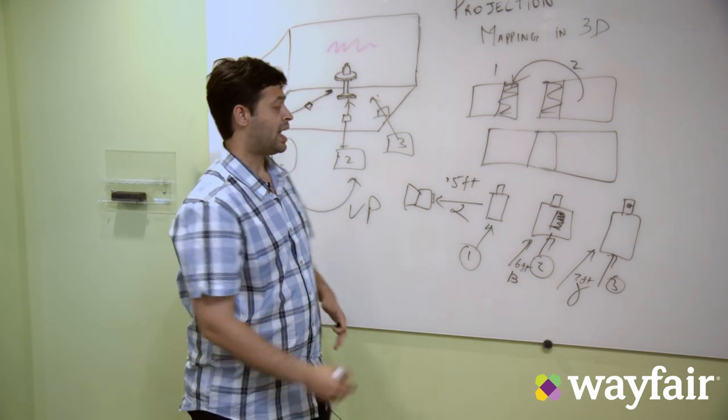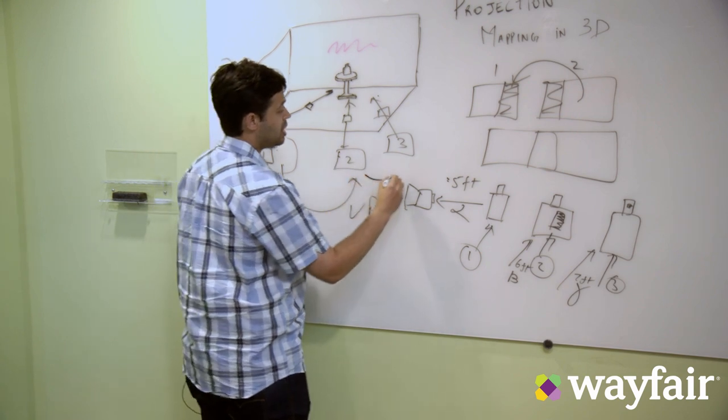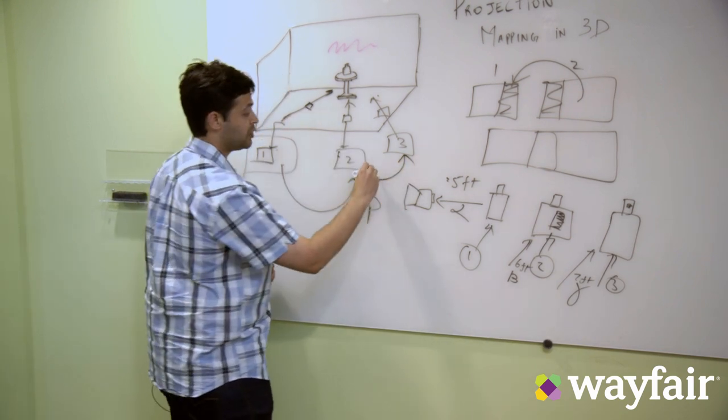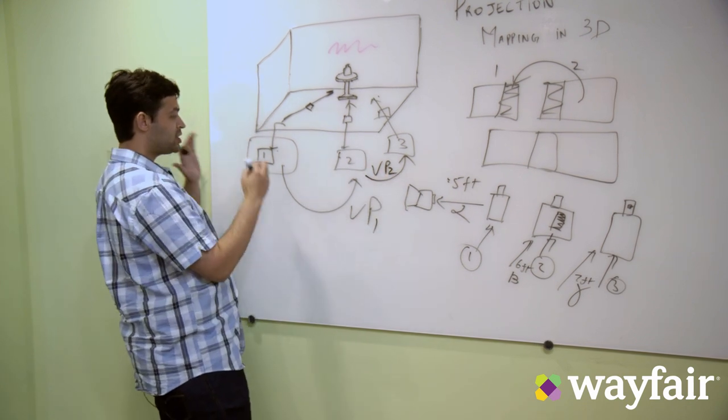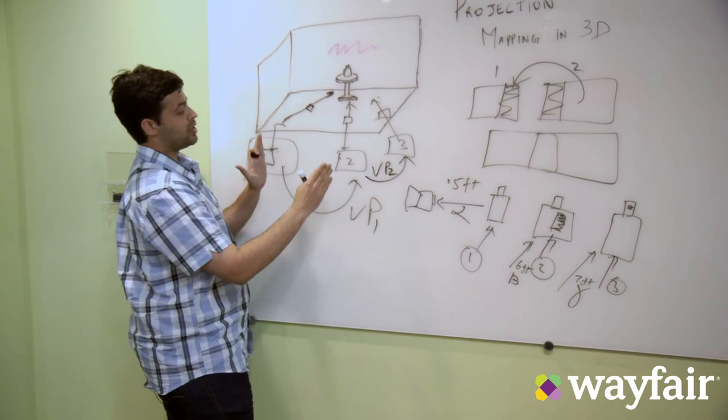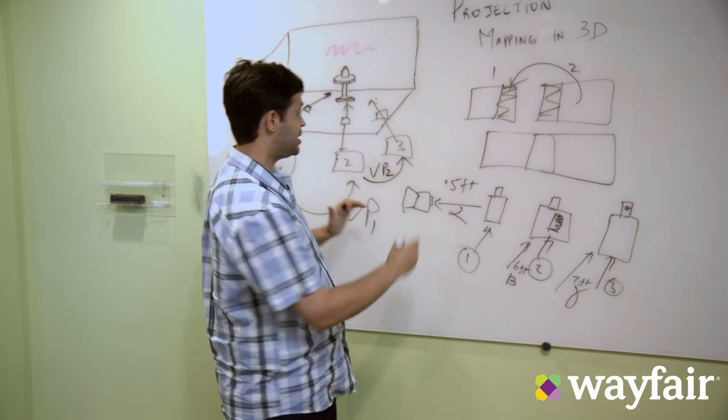Applying the viewpoint projection matrix over this shot, we could generate this another shot artificially. Similarly, once we have this, we can do another transformation. Let me call it VP1 and this is VP2.